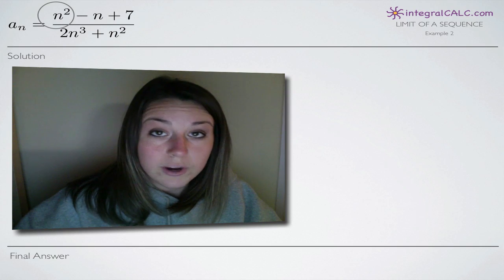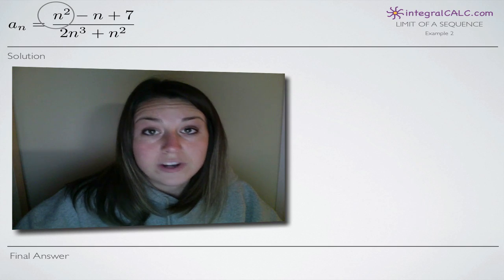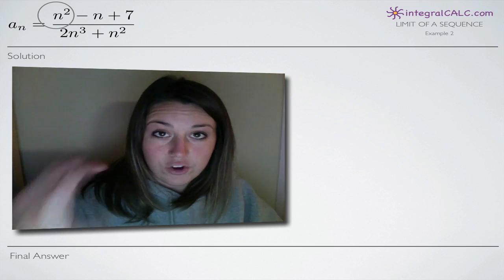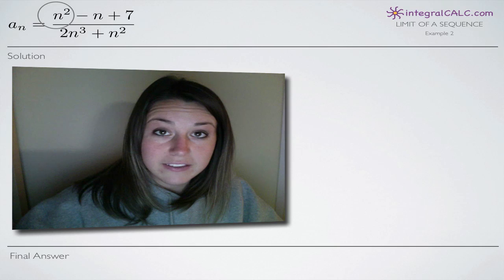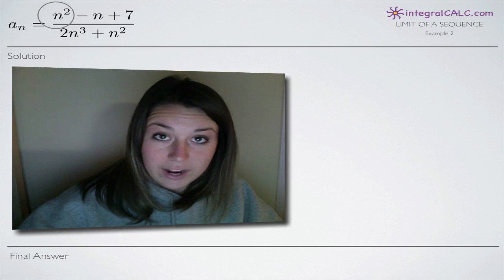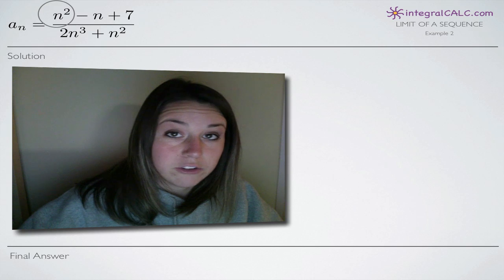So for example, this n squared term is n squared divided by 1. We want n in the denominator where the 1 is instead of in the numerator where the n squared currently is. If we divide through by n cubed, we'll end up with 1 over n, right? So n would be in the denominator of that particular term.